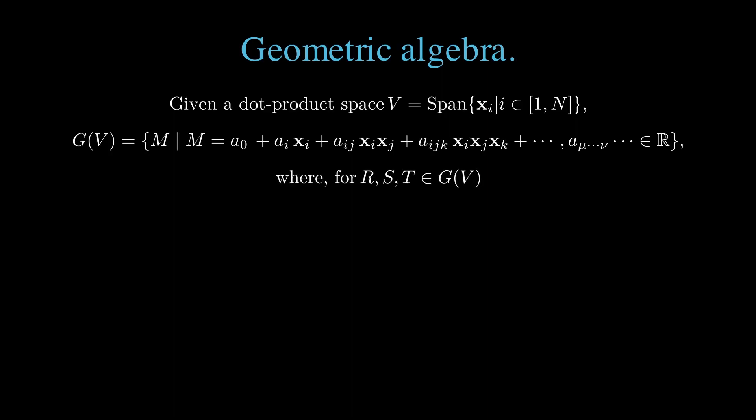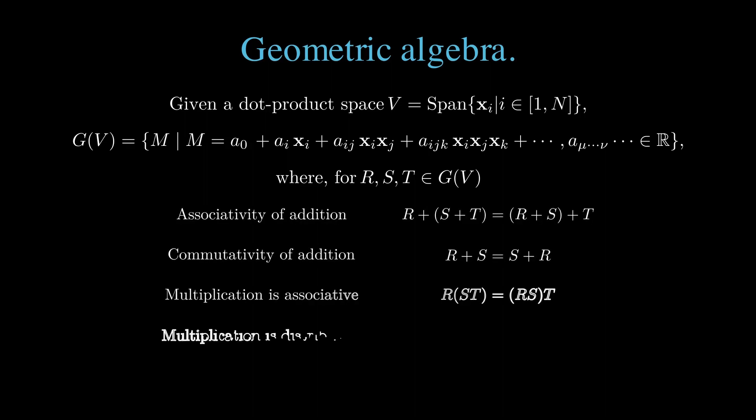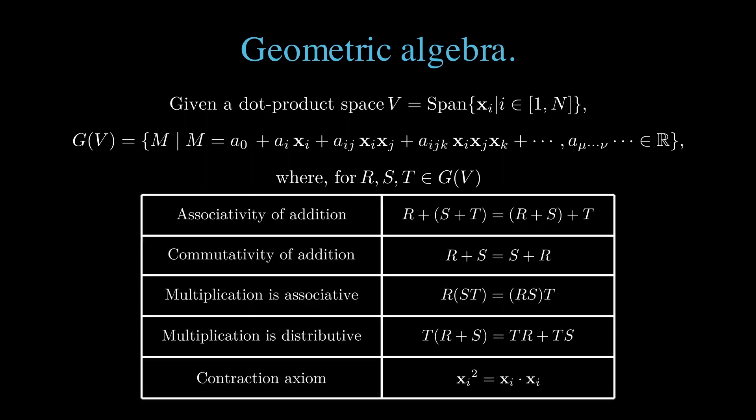are linear combinations of all the possible scalars, vectors, and products of vectors. A geometric algebra has an associative and commutative addition operation, and has an associative and distributive, but not necessarily commutative, multiplication operation.